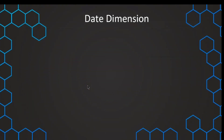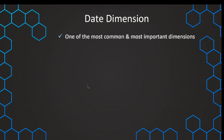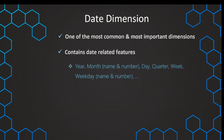The date dimension is the most commonly used dimension — it is almost available in all processes and therefore almost always present in a data warehouse. It is one of the most important aspects of dimensional analysis because we want to measure performance over time and across different date-related aspects.